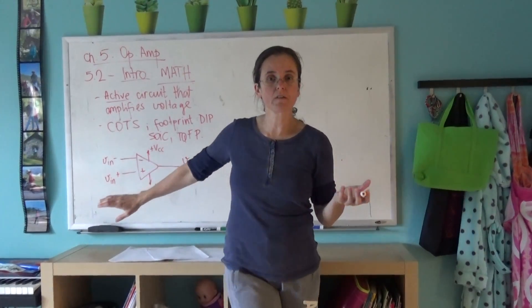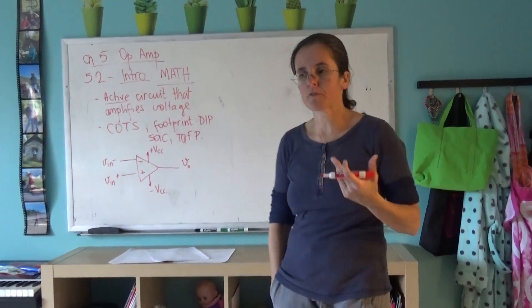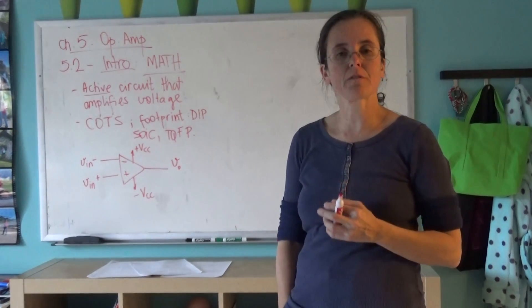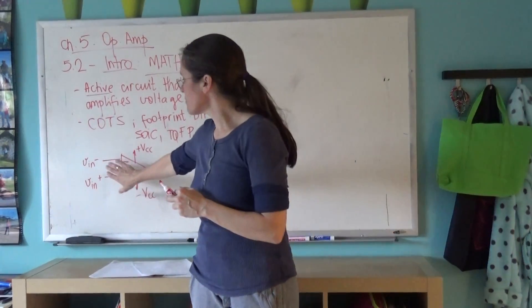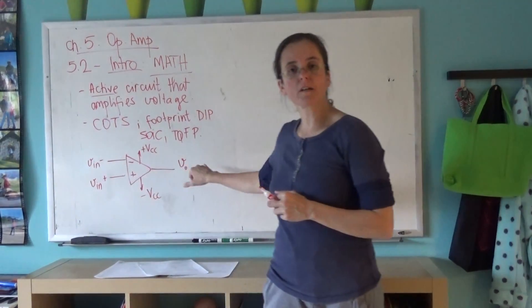You put, for example, 5 volts and minus 5 volts, or 5 volts and 0. The signal that you're putting in—this is the signal that's getting amplified.